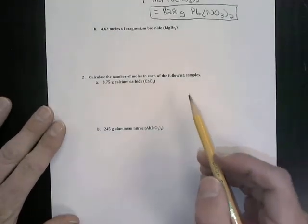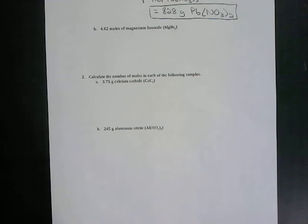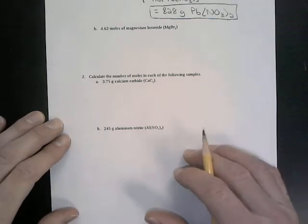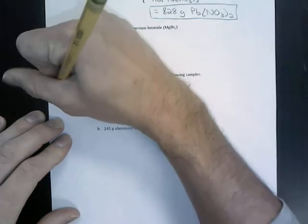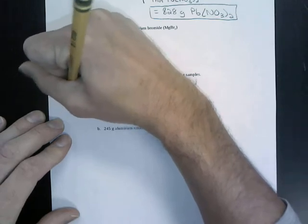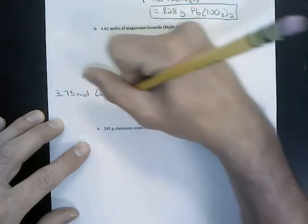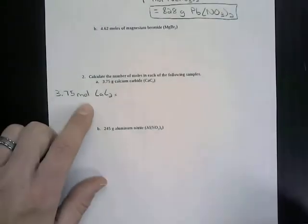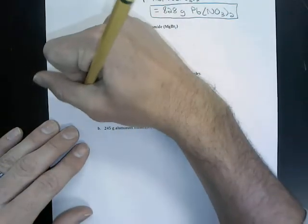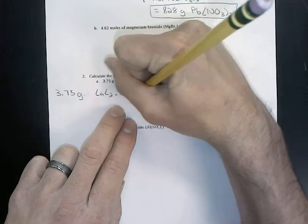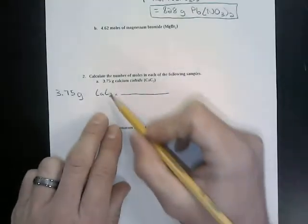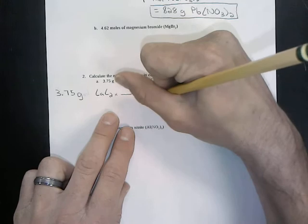In this first problem we have 3.75 grams of calcium carbide. Always start out by writing the given values in the problem. This is 3.75 grams — it's always important to write down exactly what you're given. In this problem we need to cross-cancel our units, so grams of calcium carbide will be on the bottom.